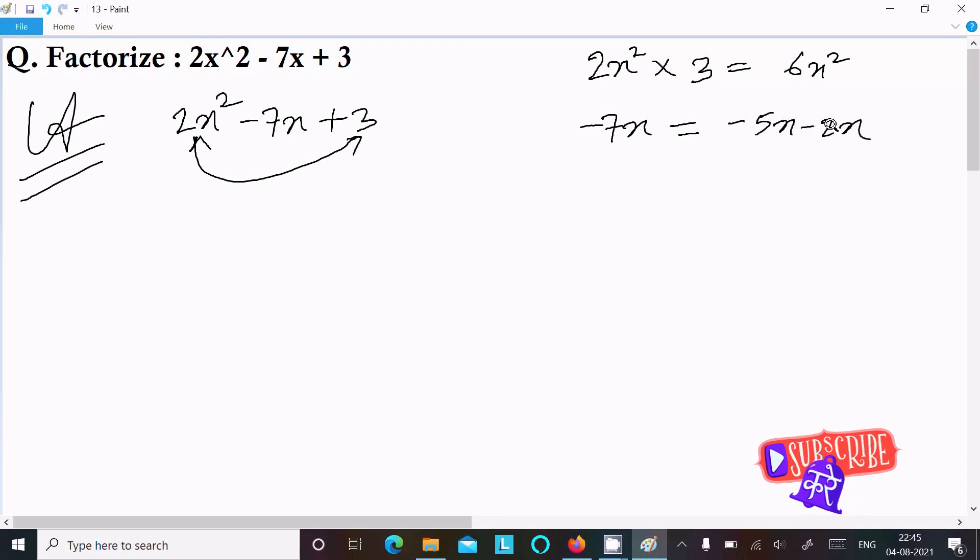Now we can write -7x as -5x - 2x. So here it equals -7x, but when I multiply -5x times -2x, negative times negative changes to plus. Here 5 times 2 is 10, x times x is x². So here we get 10x². But when we use -5x - 2x, we're getting 10x², and both are not same. 6x² and 10x² are not equal, so we cannot use -5x and -2x combination.